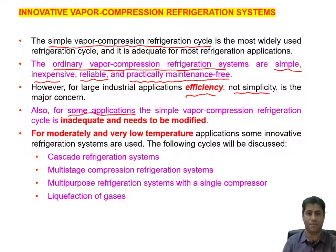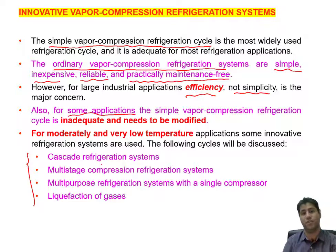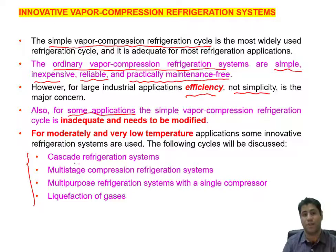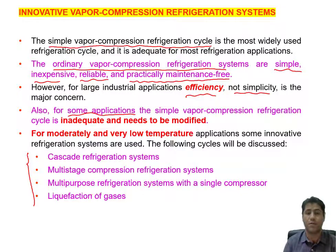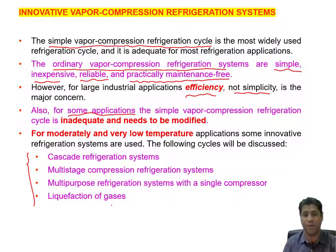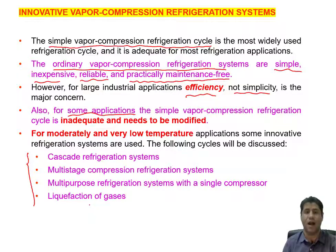For some applications the simple vapor compression refrigeration cycle is not enough and needs to be modified. In this session I will introduce four different types of modification: cascade refrigeration systems, multi-stage compression refrigeration systems, multi-purpose refrigeration systems with a single compressor, and liquefaction of gases. All of these modifications are introduced based on the requirement and the application.